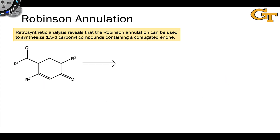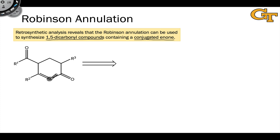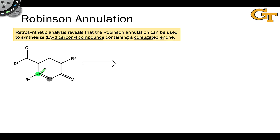Because of the synthetic utility of the Robinson annulation, it's worth taking a little bit of time to analyze the reaction retrosynthetically. The most general product of Robinson annulation is a 1,5-dicarbonyl compound that contains a conjugated enone — in other words, an alpha-beta unsaturated ketone. The unsaturated ketone comes from an aldol-type process, with the atom highlighted in black as the nucleophile and the atom highlighted in green as the electrophile, which was originally part of a carbonyl group. The Michael process generates the bond between the alpha-carbon of one carbonyl group and the beta-carbon of the other.